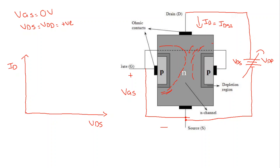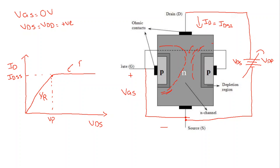When the voltage Vds increases from zero to some value, we have a linear graph as determined by Ohm's law, and the slope of this graph is constant at 1/R. Then when Vds increases to the pinch-off voltage, we have a constant current, and this constant current is called IDSS — drain-to-source current with source-to-gate short-circuited. At this stage we have infinite resistance of the channel.